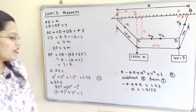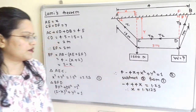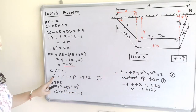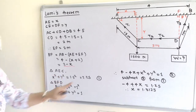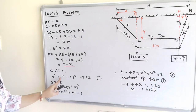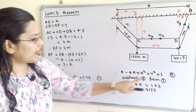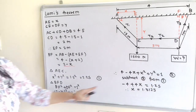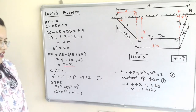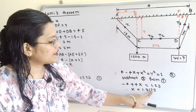Subtracting equation 2 from equation 1, the X² and Y² terms cancel: −4 + 4X = 2.25 − 1 = 1.25. Solving, we get X = 1.3125.